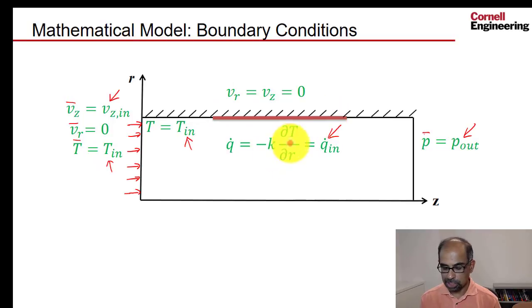So coming back to this boundary condition, you determine what's the heat flux that you're putting into the flow. And that should be equal to minus k dT/dr from Fourier's law. This is the gradient, the temperature gradient normal to the wall. So essentially what you're doing is you're setting dT/dr.